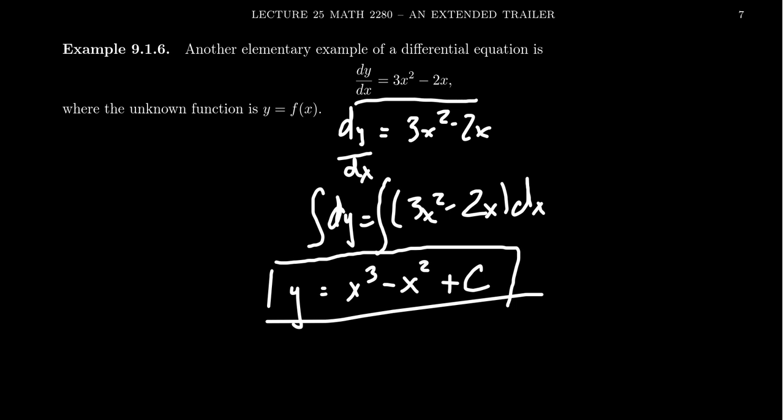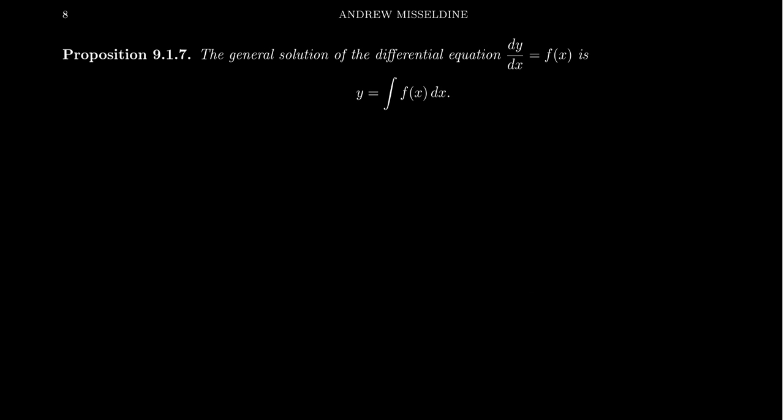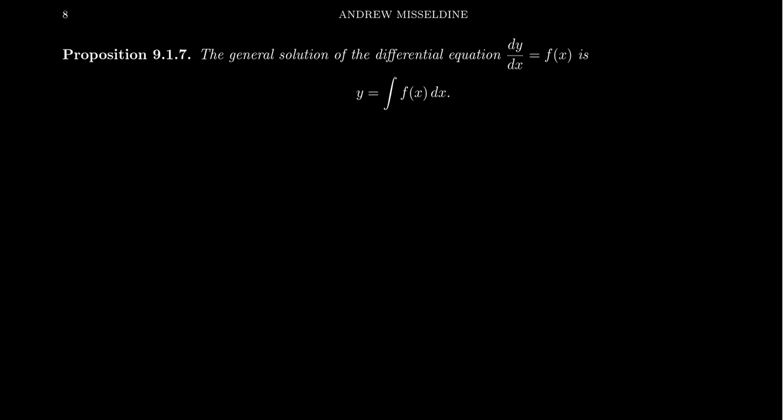Notice that this differential equation — finding a function whose derivative is 3x squared minus 2x — is exactly what we do when we find an antiderivative. So calculating antiderivatives is actually a type of differential equation solving. More generally, if you have the differential equation y prime equals f of x, then the solution is y equals the integral of f of x dx. Don't forget the plus c for the general solution; without it, you're assuming c equals 0 and getting only a particular solution.